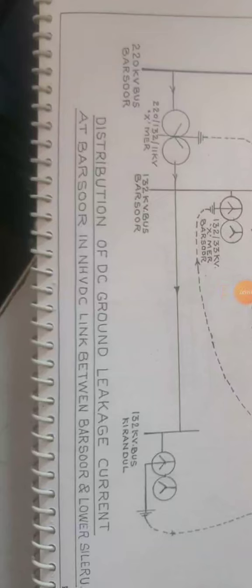Respected sirs, kindly refer to this diagram regarding distribution of DC ground leakage current at Barstool in the 3DC link between Barstool and lower cellul.